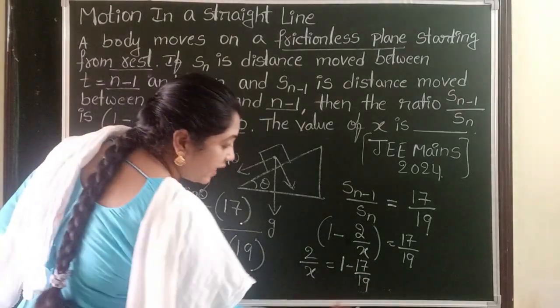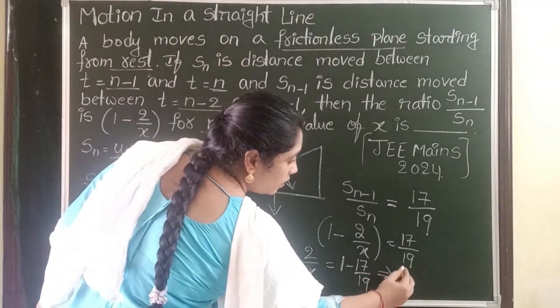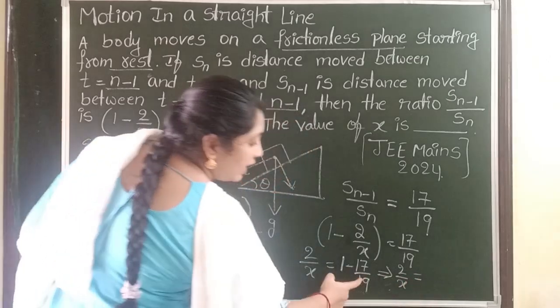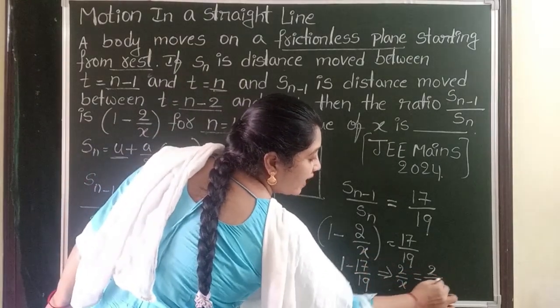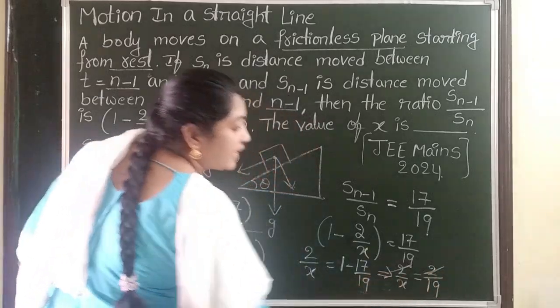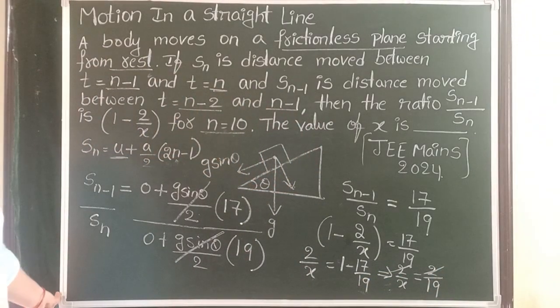Take LCM. 2 by X equals 19 minus 17 over 19, which becomes 2 by 19. The 2s get cancelled. The value of X is 19.